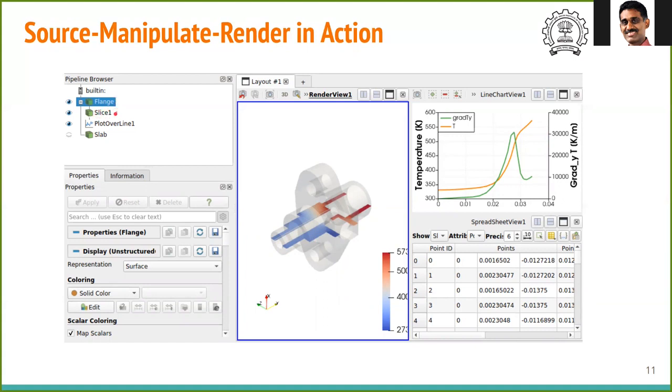The first manipulation is called a slice which takes 3D data and gives 2D planar data. The second one takes the 3D data and extracts the line data. Let us see how the slice is specified.